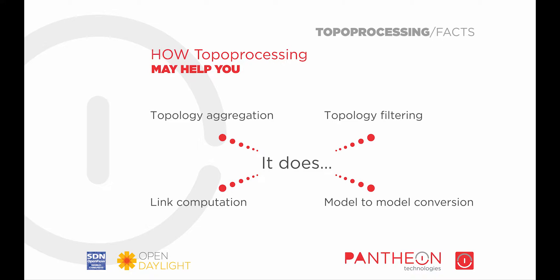By aggregation, we mean topology combination based on some common condition. Topology filtering deals with topology slicing and can also be used for unnecessary data filtering. The link computation feature calculates overlay links based on links from underlay topologies. Because if you create an overlay topology, overlay nodes are assigned new node IDs, and underlay links cannot simply be copied to the overlay topology as they would point to nothing. Link computation creates corresponding links between the overlay nodes.